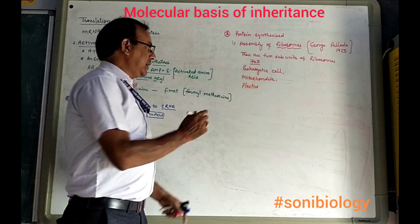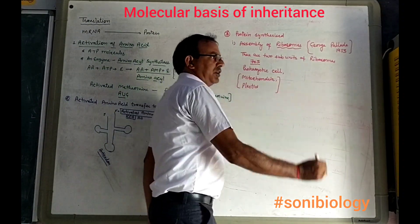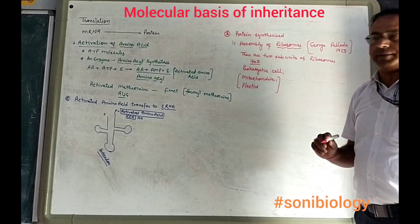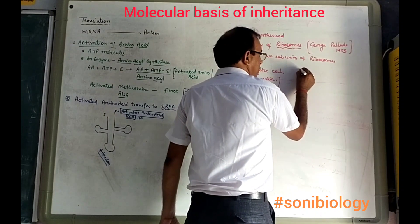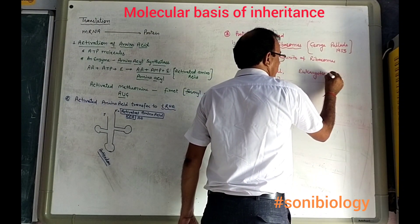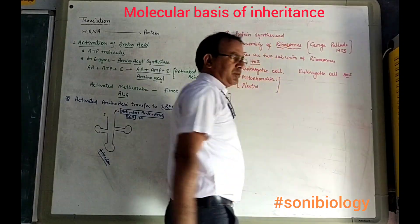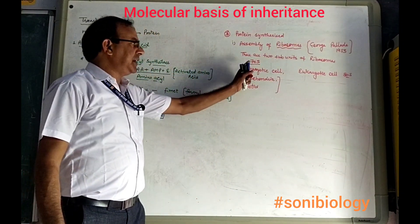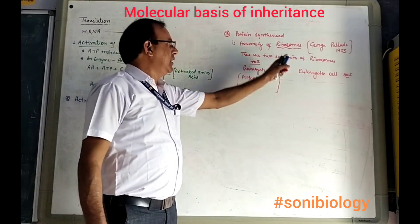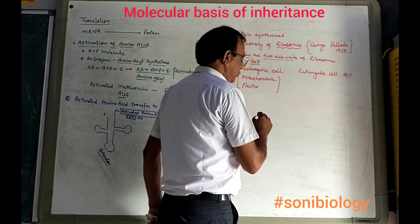All prokaryotic cells contain 70S ribosomes. But there are two organelles found in eukaryotes — mitochondria and plastids — which also contain 70S ribosomes. The second type is the eukaryotic cell, which contains 80S ribosomes.